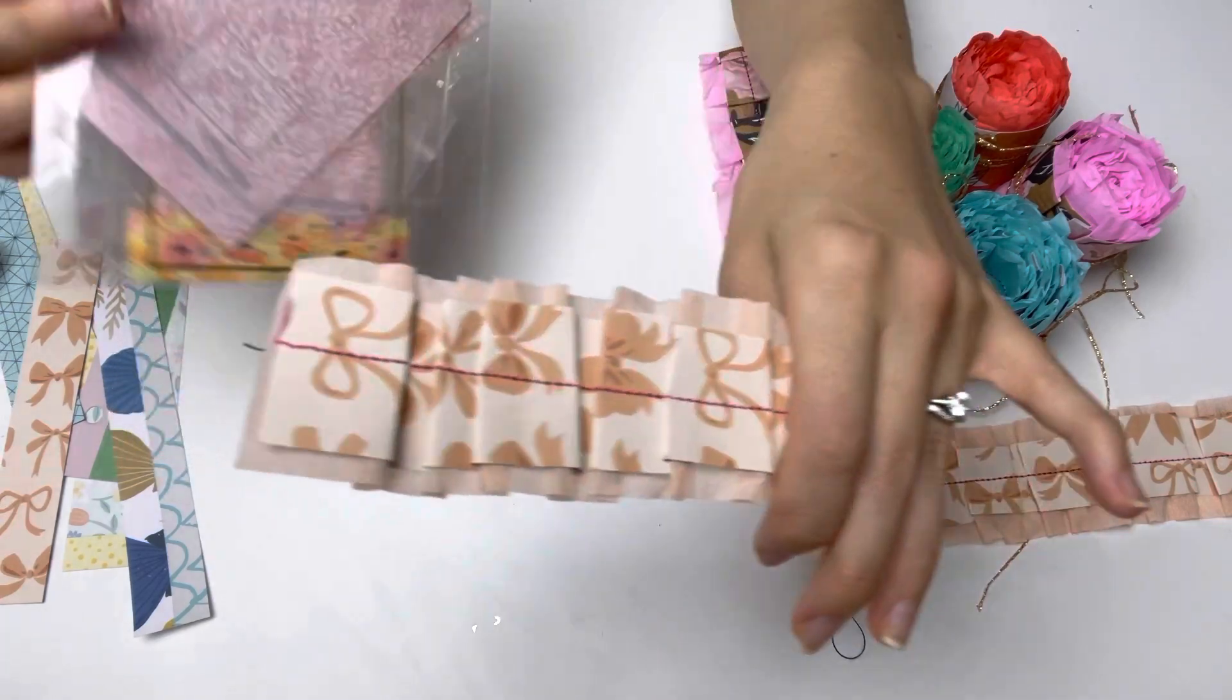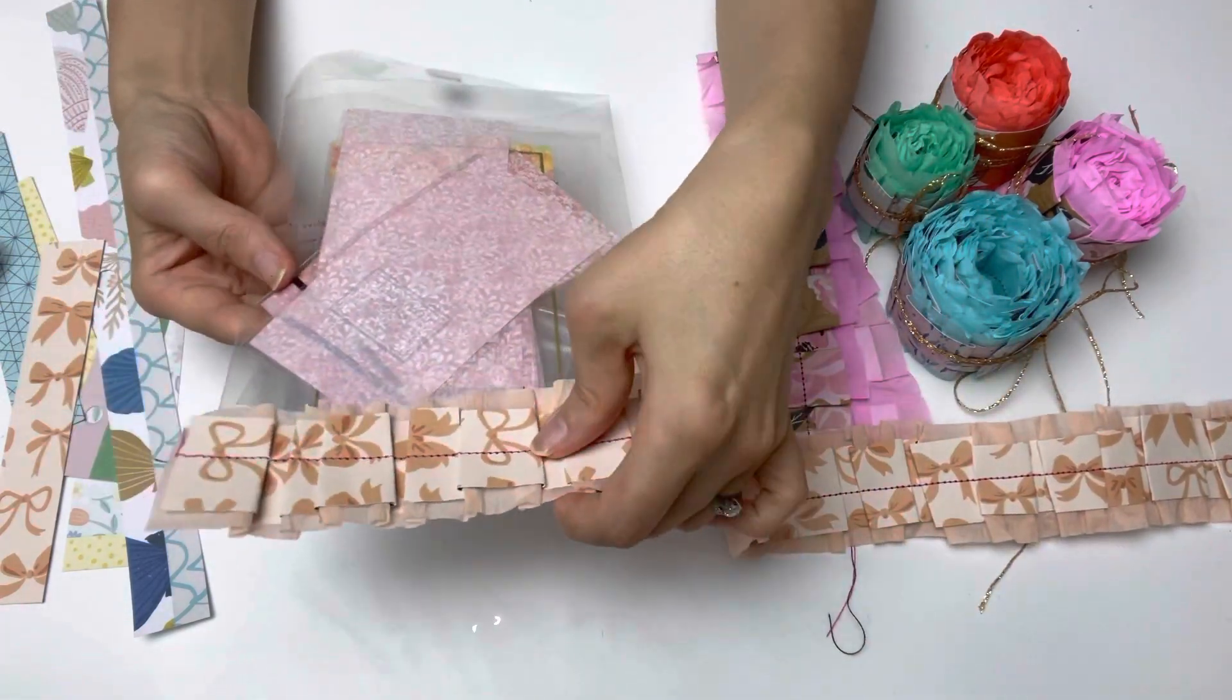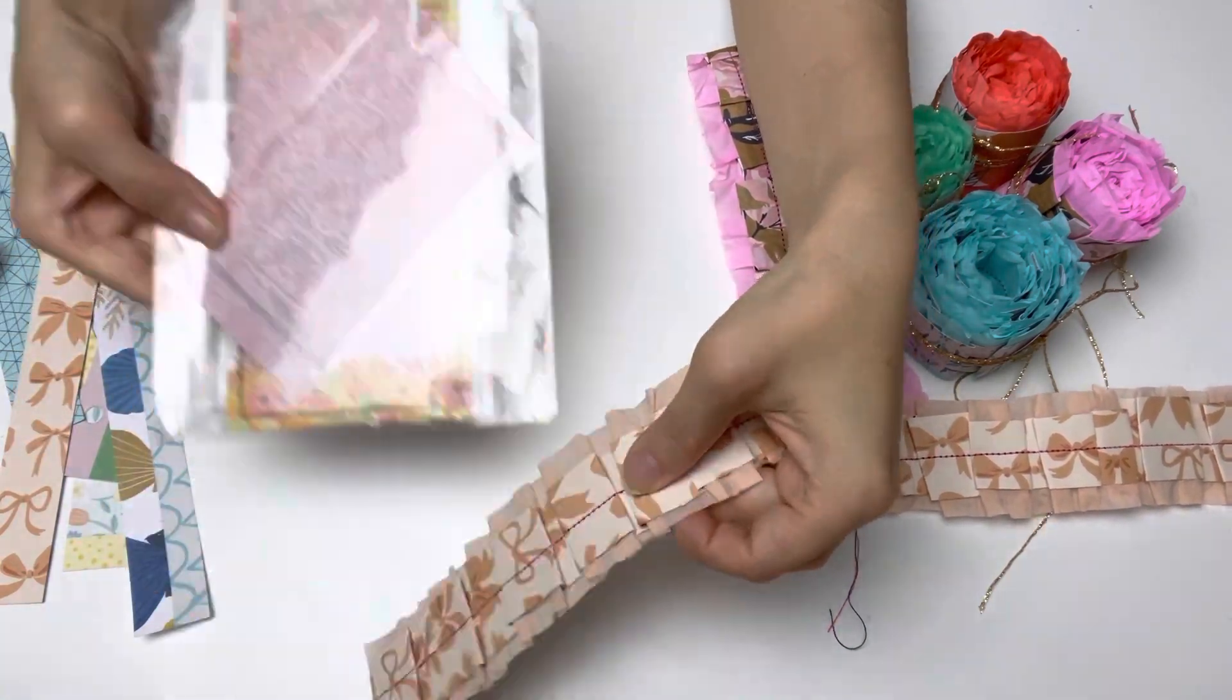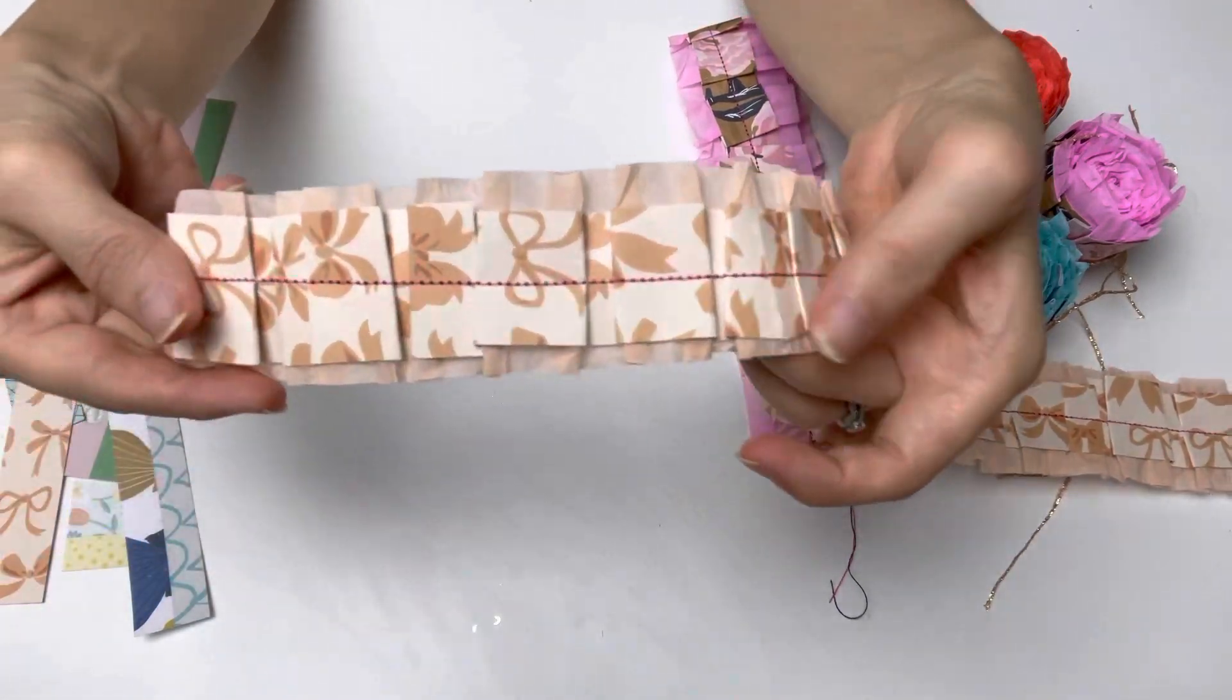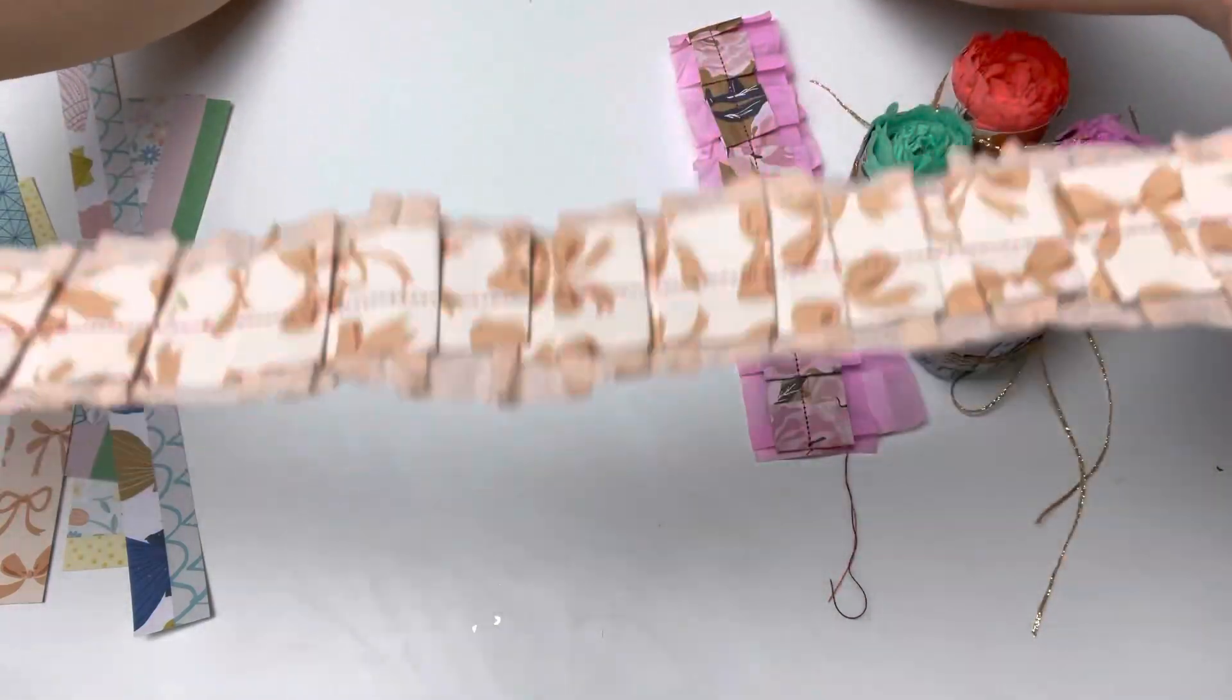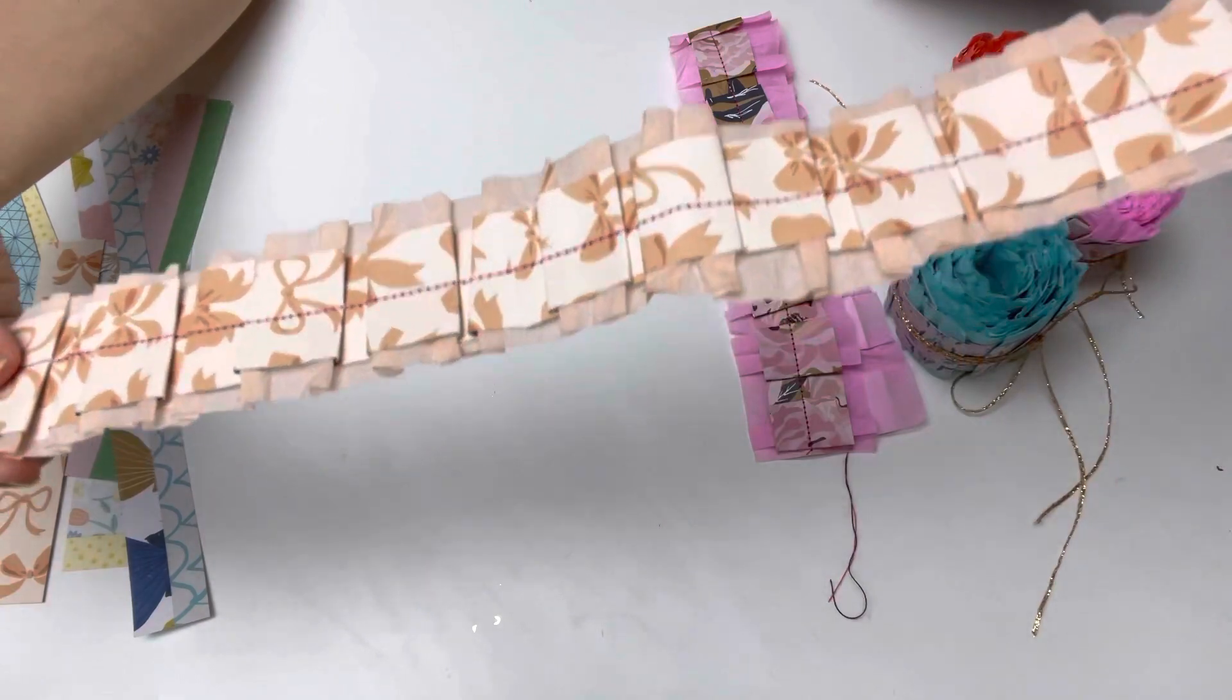You can also use this to make your bag toppers by cutting it, measuring the bag size. For example, if I were to use this size bag and I wanted to make a bag topper, then I just have to put it at the top and measure it and cut here. And then I can add my words and other embellishments to make a bag topper.